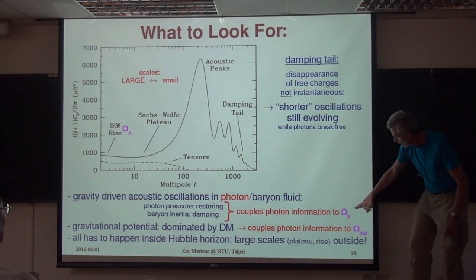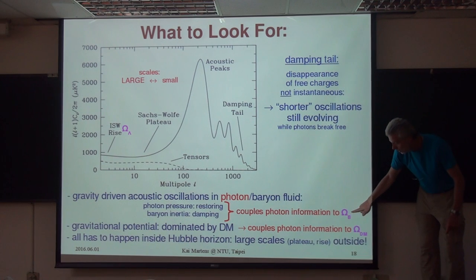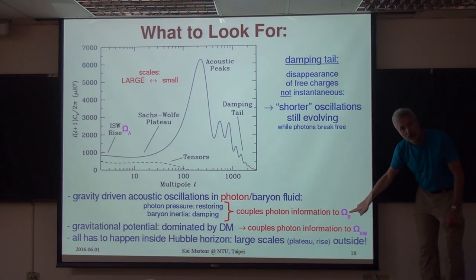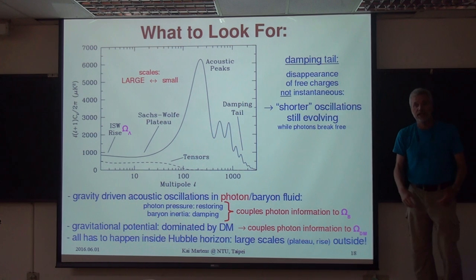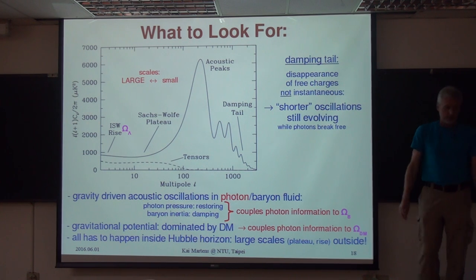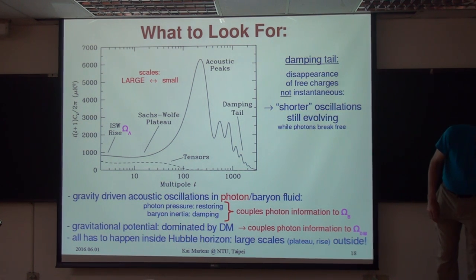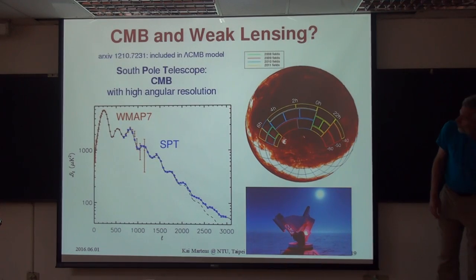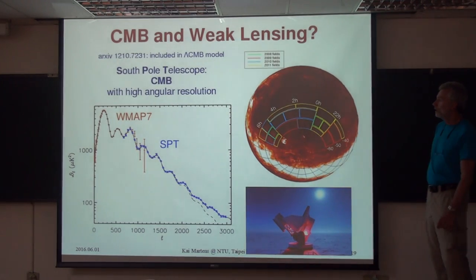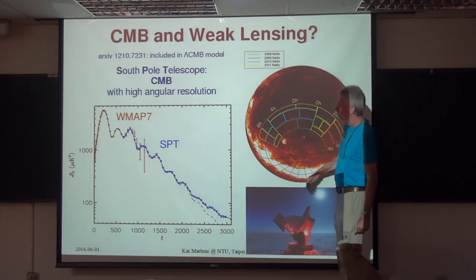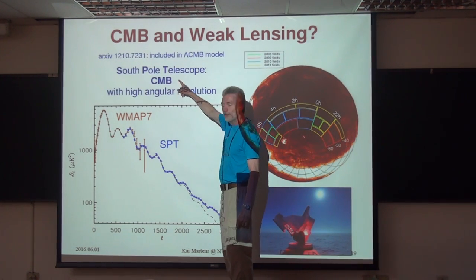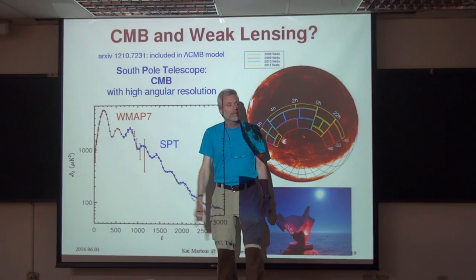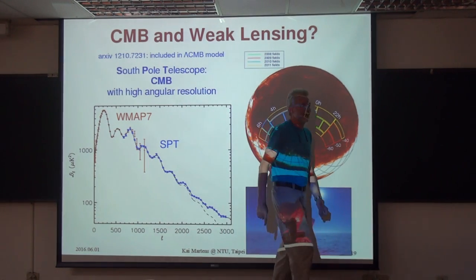From these fits you can figure out how much baryonic matter, omega_b, and omega dark matter - how much dark matter you need. And then you put all of this in to figure out how the universe is put together.